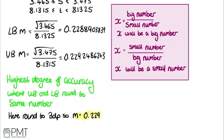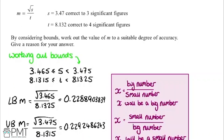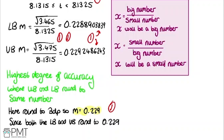We need to give a reason for our answer of m = 0.229. The reason is that both the lower bound and upper bound round to 0.229 at three decimal places. In terms of marks: one mark for working out the bounds of s and t, a second mark for substituting the correct combination of upper and lower bounds into the equation, another mark for choosing the right combination, another for getting the correct values, and the final mark for the answer 0.229 with the correct reasoning.